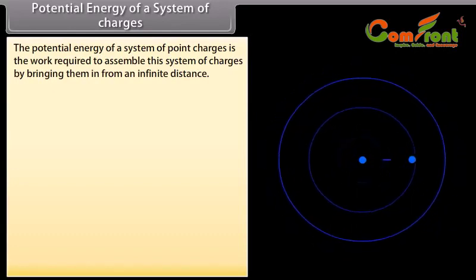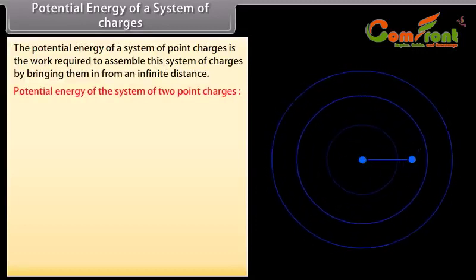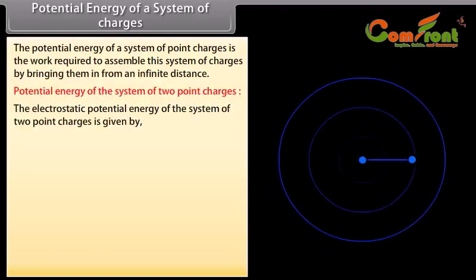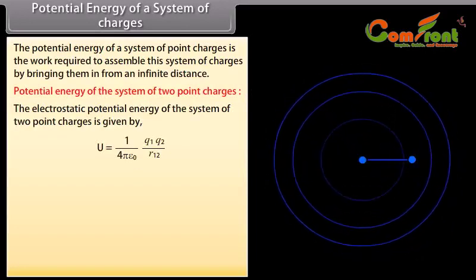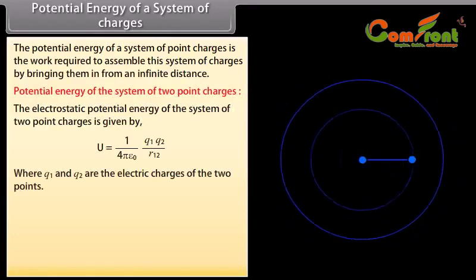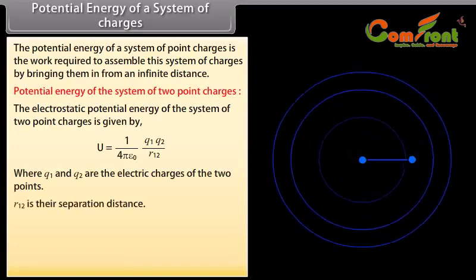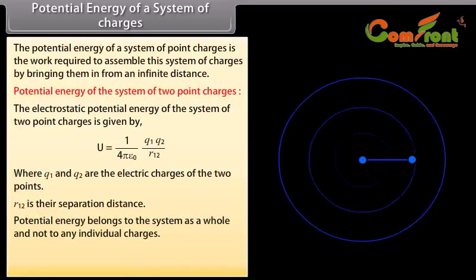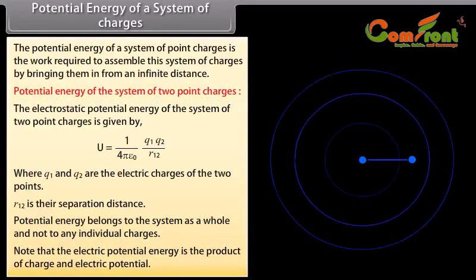Potential energy of the system of two point charges. The electrostatic potential energy of the system of two point charges is given by U equals 1 upon 4π ε₀ multiplied by Q1Q2 upon R12, where Q1 and Q2 are the electric charges of the two points and R12 is their separation distance. Potential energy belongs to the system as a whole and not to any individual charge. Note that electric potential energy is the product of charge and electric potential.